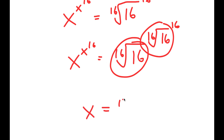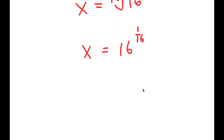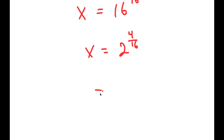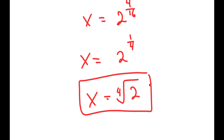So x is equal to the 16th root of 16. I can simplify this: the 16th root of 16 is the same as 16 to the power of 1 over 16. And since 16 is 2 to the power of 4, I get 2 to the power of 4 over 16, which equals 2 to the power of 1 over 4, which is the 4th root of 2. So this is my answer.